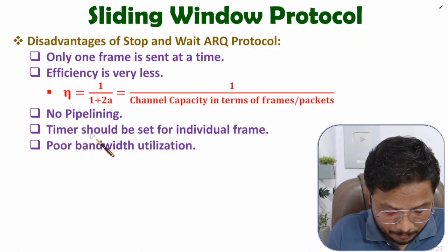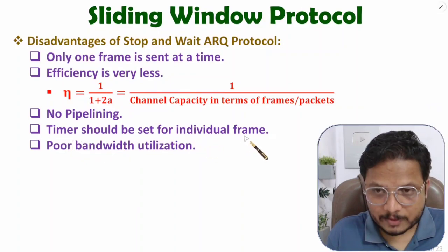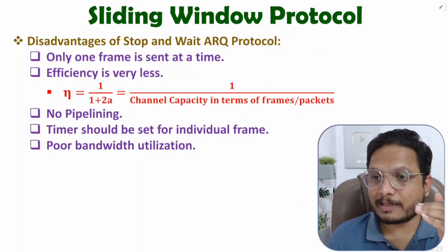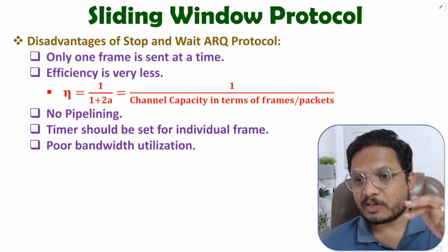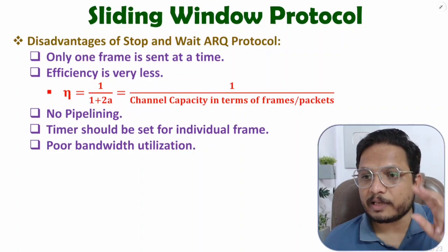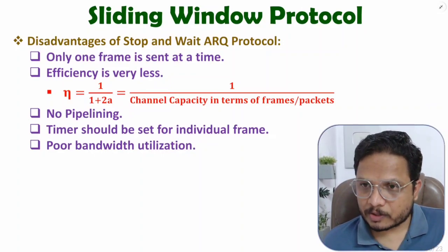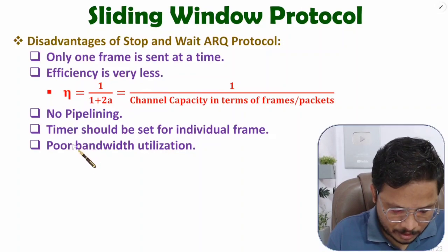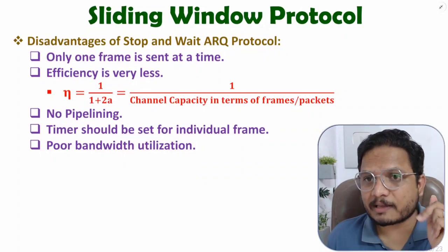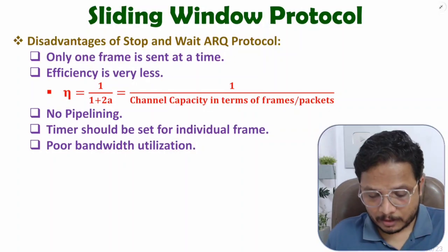With individual frames we are setting a timer. If any frame is lost or if an acknowledgement is lost, the timer runs out and we have retransmission in stop-and-wait protocol. So with individual frames we need to have a timer — that is another big disadvantage. Because of all these issues there is poor bandwidth utilization. Now I'll explain the basics of sliding window protocol.